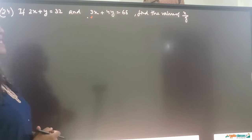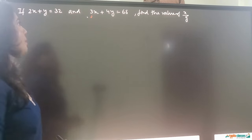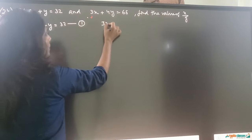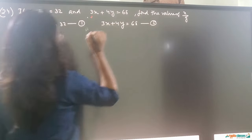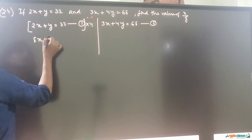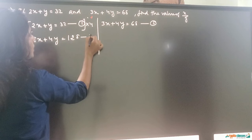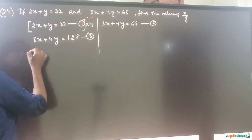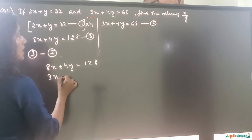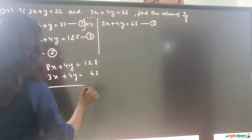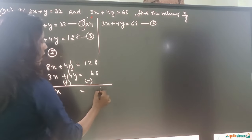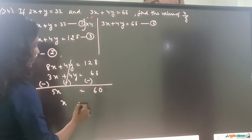Question number 24: if 2x plus y equals 32 and 3x plus 4y equals 68, find the value of x upon y. Equation 1 is 2x plus y equals 32 and equation 2 is 3x plus 4y equals 68. Multiplying equation 1 by 4 gives 8x plus 4y equals 128 — equation 3. Subtracting equation 2 from equation 3: 4Y cancels, 8x minus 3x equals 5x equals 60, so x equals 12.